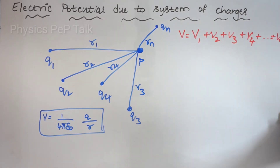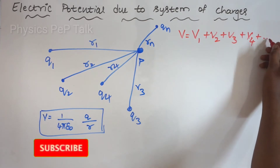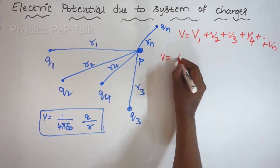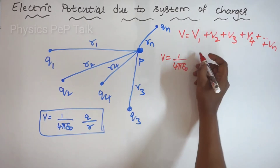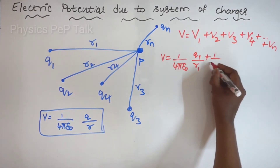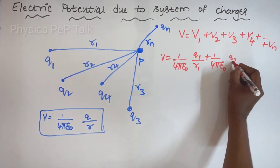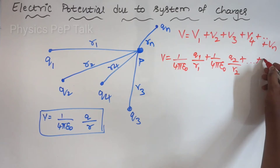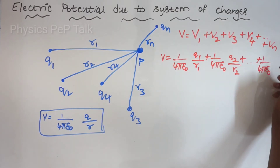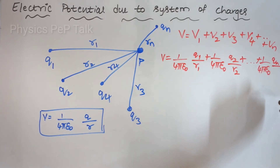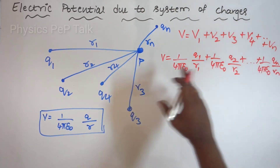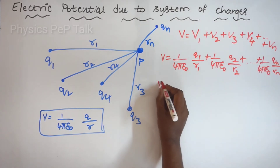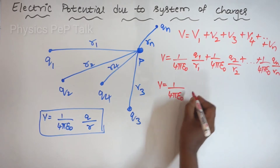Now, if we call this total potential, it is V1 plus V2 plus ... plus Vn. What is V1? V1 is nothing but 1 by 4 pi epsilon naught, Q1 by R1. Similarly, V2 is 1 by 4 pi epsilon naught, Q2 by R2. V3 is 1 by 4 pi epsilon naught, Q3 by R3, so on and so forth. The last charge term is 1 by 4 pi epsilon naught, Qn by Rn. So this is the total electric potential at point P. Now, 1 by 4 pi epsilon naught is common — I will write it outside.